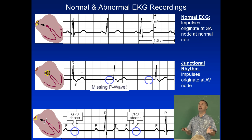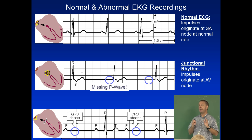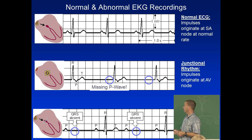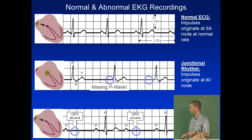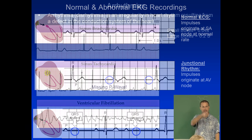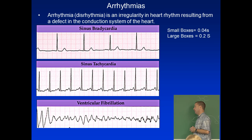Heart block occurs when depolarization from the SA node isn't reaching the AV node or bundle branches, causing missing QRS waves. The heart pays attention to the fastest pacemaker, so if the SA node fails, the AV node can take over but at a lower rate. An example from clinical experience: a dog reacted to an anesthetic and began throwing premature ventricular contractions visible on EKG, which was treated with a lidocaine injection.